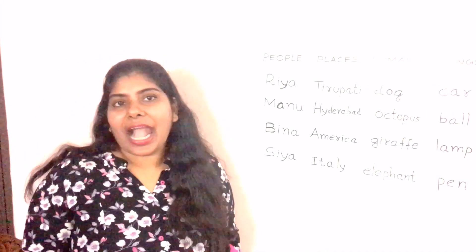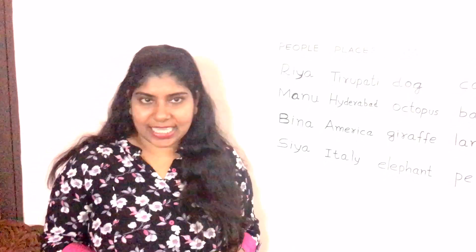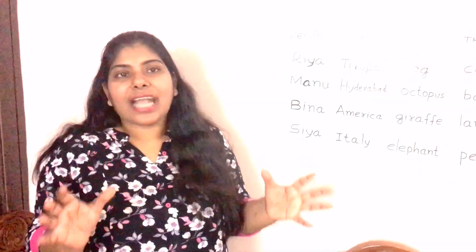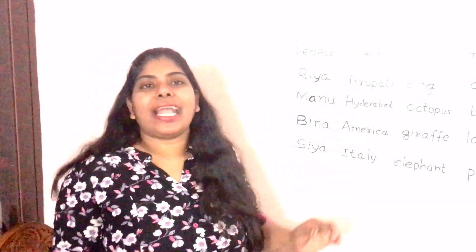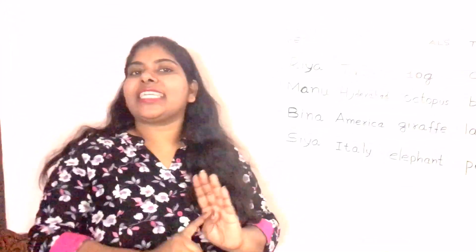So I hope you got an idea about nouns. Your home task is to write the names of people, places, things and animals in your books — at least five for each. The second task is to read a small story or passage, underline the nouns, and show your elders or parents.